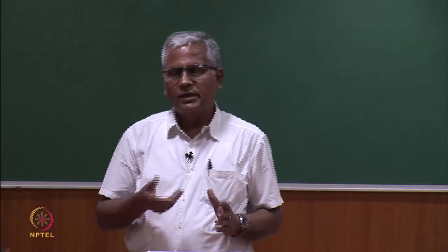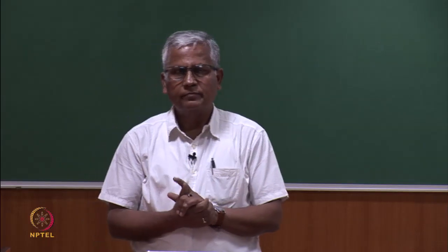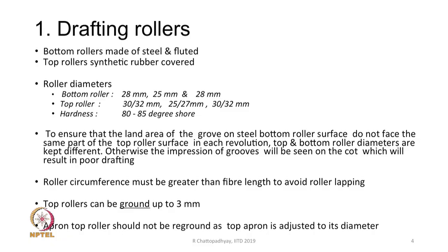The roller diameters are: bottom rollers typically 28, 25, and 28 millimeters; top rollers 30 or 32 mm for the front, 25 or 27 mm for the middle, and 32 or 30 to 32 mm for the back. The hardness of the synthetic rubber cot is 80 to 85 degrees Shore. Roller circumference must be greater than the fiber length to avoid roller lapping.